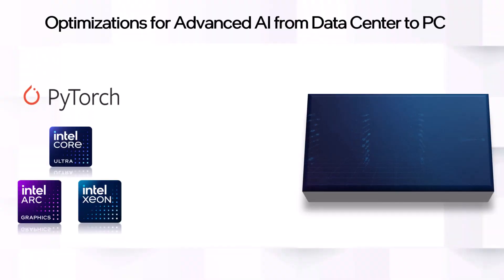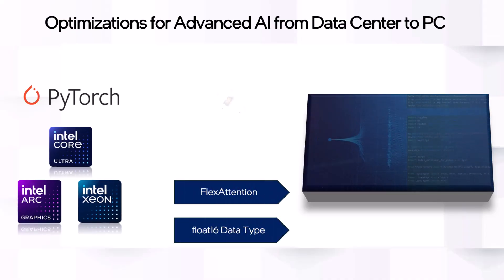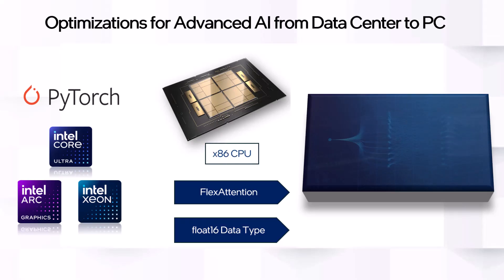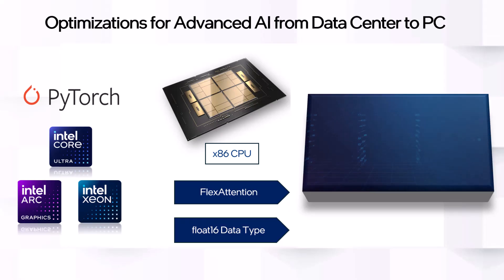As part of our efforts for embracing open-source AI frameworks, our latest PyTorch optimizations have been upstreamed to PyTorch version 2.6 and can now be utilized on the latest Intel architectures. The addition of support for Flex Attention Mechanism and Float 16 data type plays a crucial role in enhancing Gen AI LLM inference on x86 CPUs.